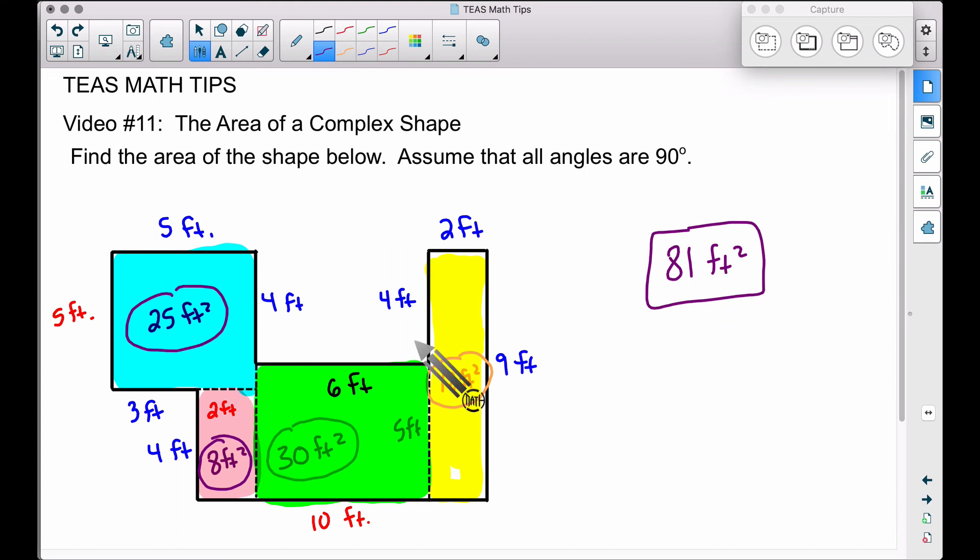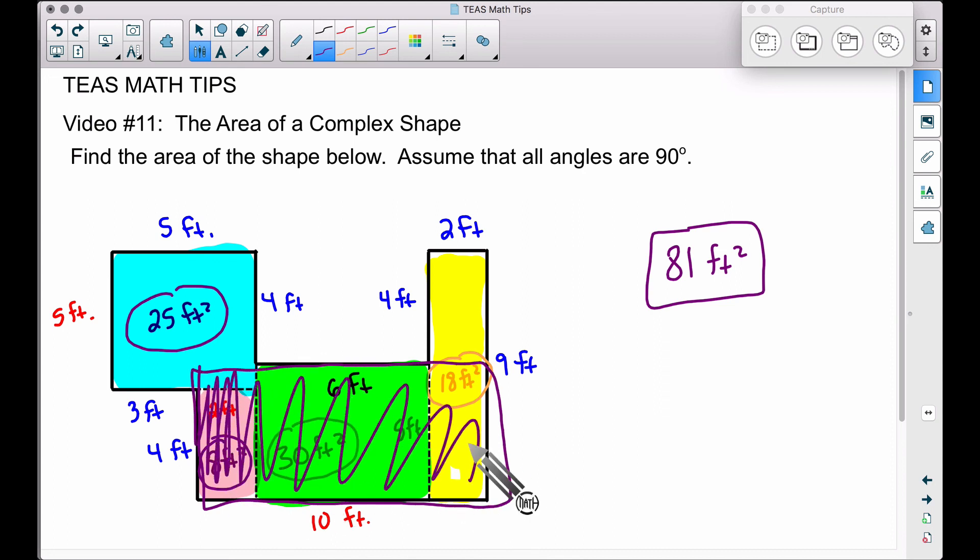I highly encourage you to try taking this shape here and breaking it up into something different than what I did. For example, some of you may take this rectangle here, you may find that area. That's going to be a little bit funky up here, but you can still do it. That would change this area here as well. But no matter how you do it, granted you break it up correctly, you find the areas, you add them up, you should get 81 square feet.